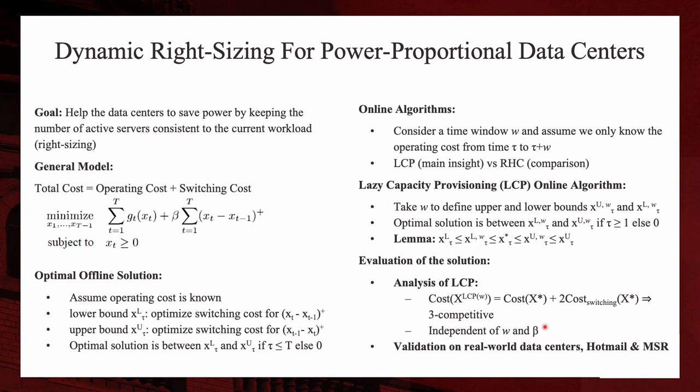What's more, the competitive ratio of LCP algorithm is not affected by the time window w and constant beta. So now it's time to bring up the RHC algorithm whose competitive ratio is not only affected by W and beta, but also higher than LCP's competitive ratio in most cases.